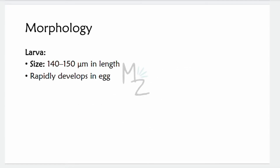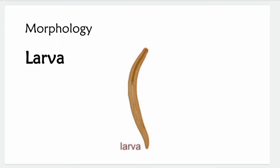Next is the larva, which varies in size from 140 to 150 micrometers in length and rapidly develops inside the egg.